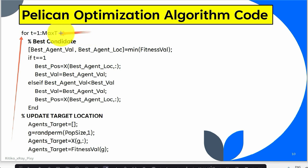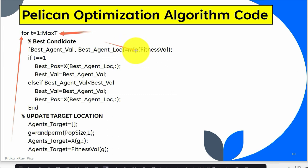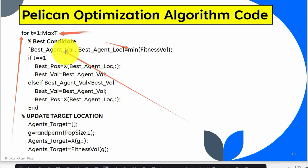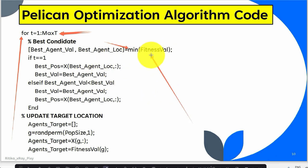Now you can see the main loop for this algorithm starts. First, we select the best candidate — the best agent among all. The agent having the minimum fitness value is declared as the best candidate. We save the fitness value and the position for that agent to display in the results. We update the agent with the minimum fitness value as the best candidate and save its position and fitness value.